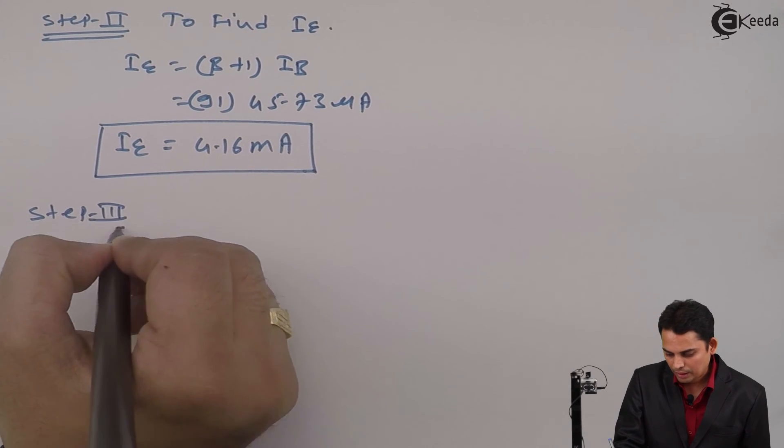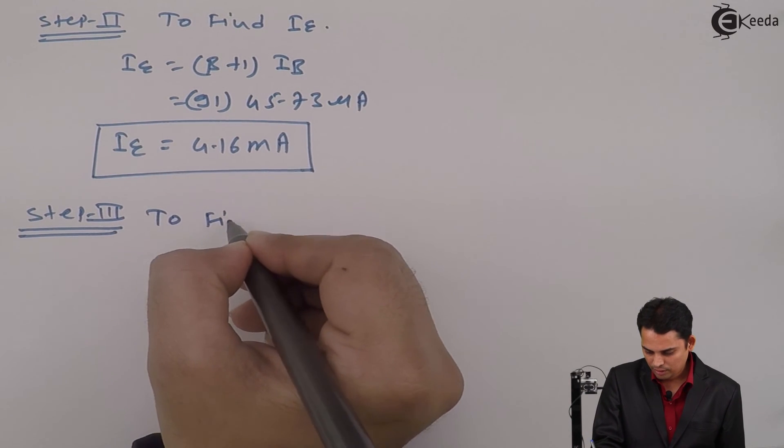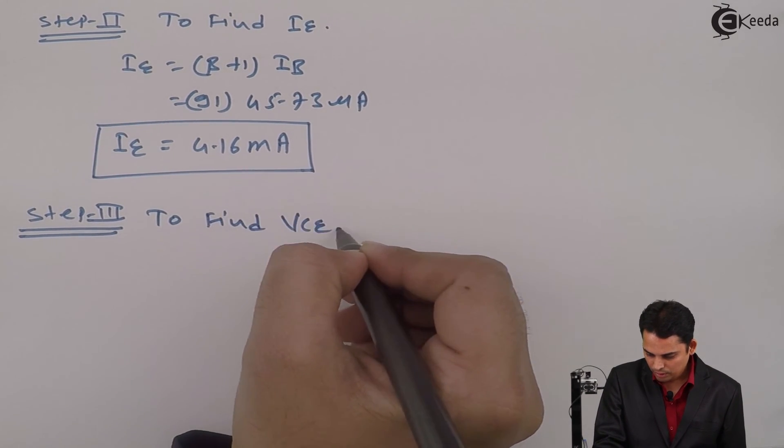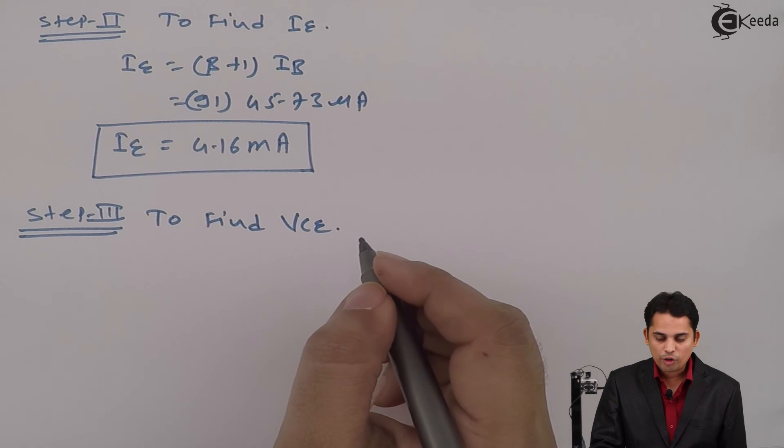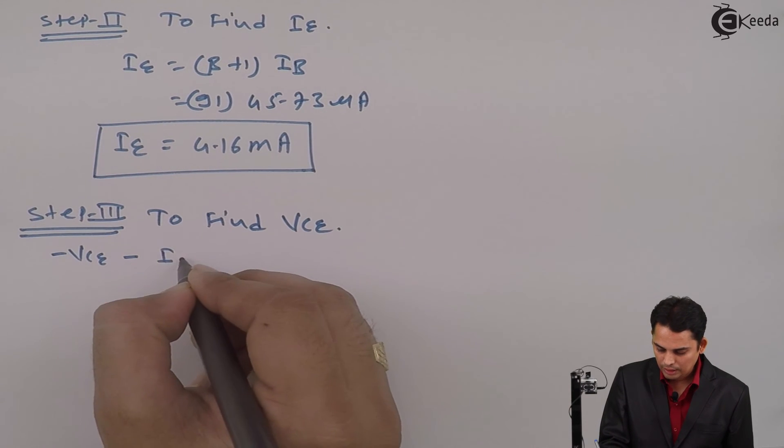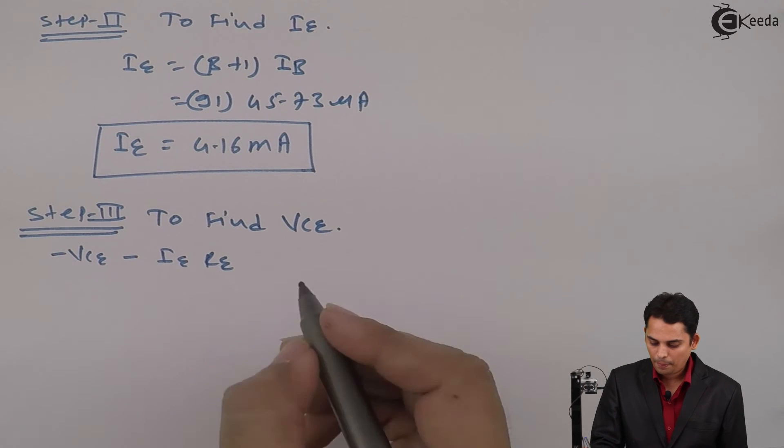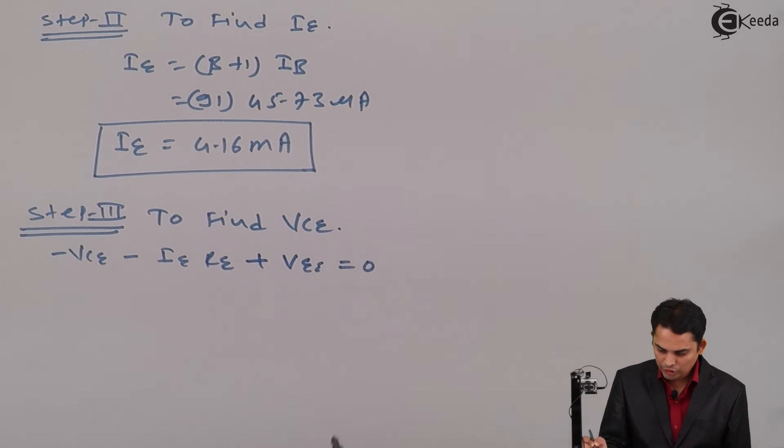Step 3 will be to find out VCE. For that apply KVL to the output. Equation will become minus VCE minus IE into RE plus VEE is equal to 0 where IE is equal to IC.